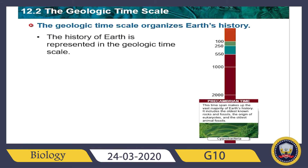Now let us explain what we mean by the geologic time scale. The geologic time scale is a representation of the history of Earth. As you can see in this diagram, it organizes Earth's history by major changes or events that have occurred, using evidence from the fossil and geologic records.